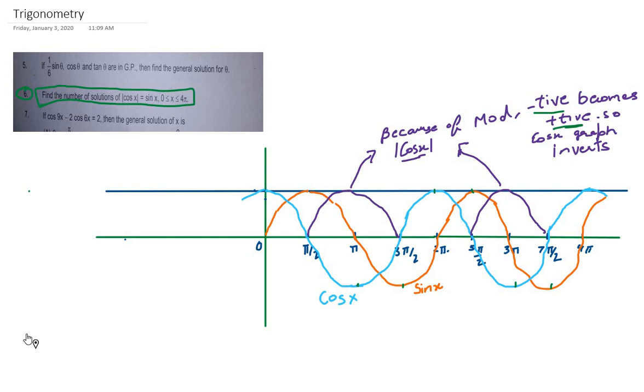For example, |−5| = 5, or |−9/2| = 9/2. Whatever the value inside mod, it will become positive. Here, cos x is negative from π/2 to 3π/2, so the one we've drawn in purple is the inverted value.